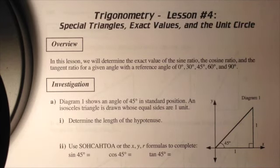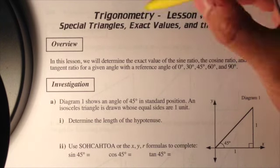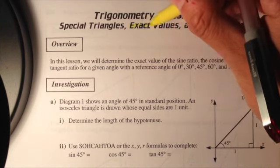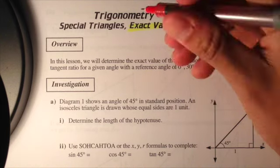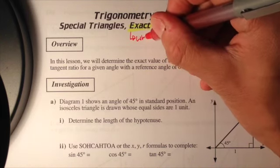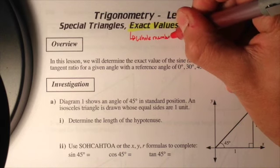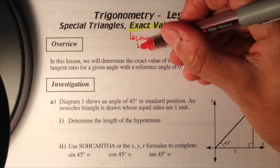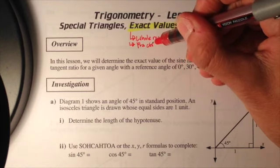Welcome to lesson number four of trigonometry: special triangles, exact values, and the unit circle. Exact values in math are numbers that can only be expressed as whole numbers, fractions, or radicals.